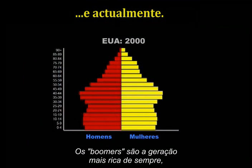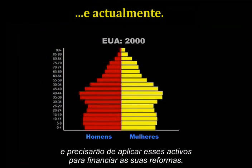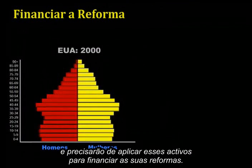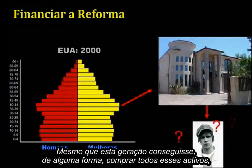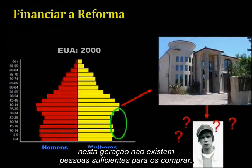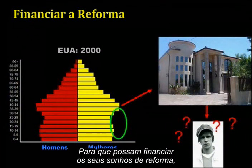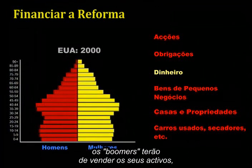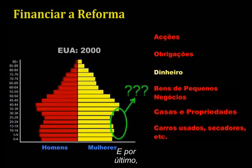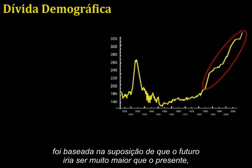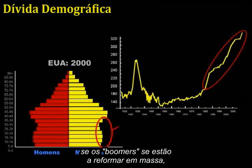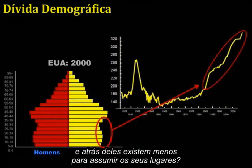The boomers are the wealthiest generation ever — they hold nearly all of the assets, and they will need to dispose of those assets to fund their retirements. Who exactly are the boomers planning on selling their assets to? Even if the next generation could somehow afford to buy all these assets, there simply aren't enough people in that generation to buy them. In order to fund their retirement dreams, boomers are going to have to sell off their assets — and we might wonder, to whom exactly? And if the massive accumulation of debt over the past 23 years was predicated on the assumption that the future will be much larger than the present, how exactly will that come to pass if boomers are retiring en masse with fewer people behind them to take their place?